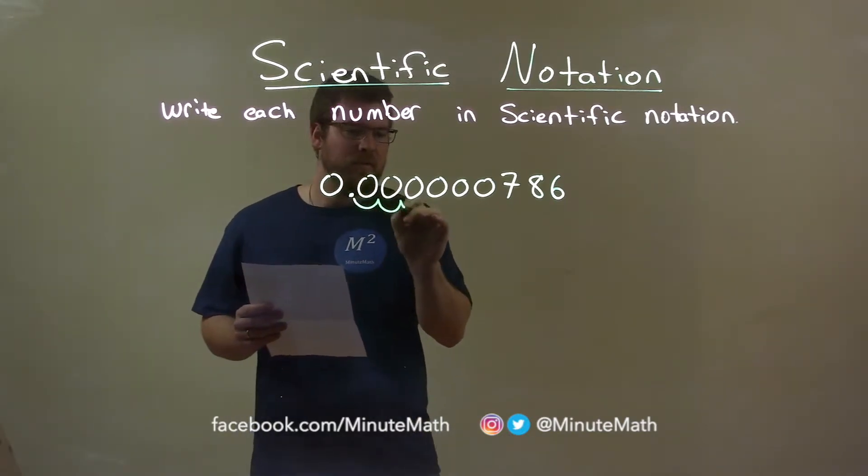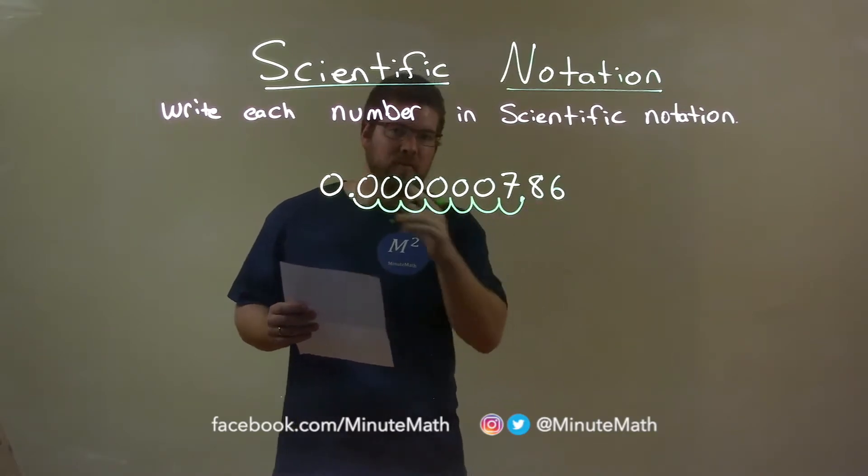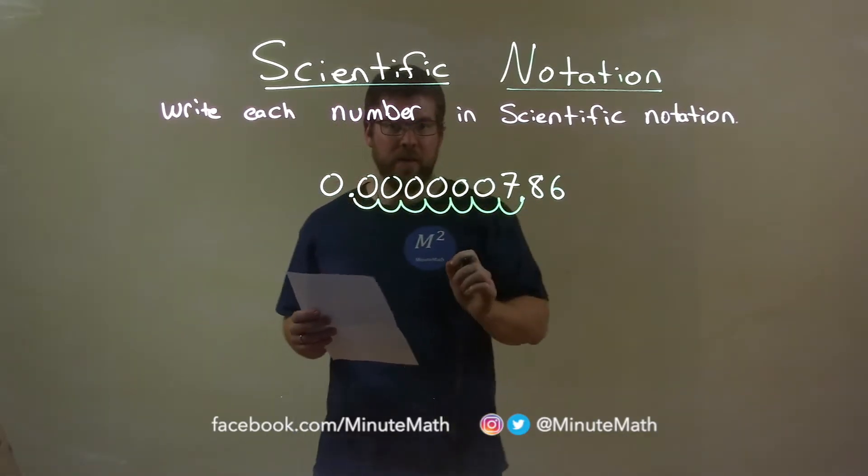If I do this, we have 1, 2, 3, 4, 5, 6, 7. So it took 7 units, or 7 movements to get there.